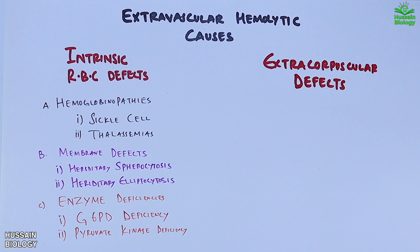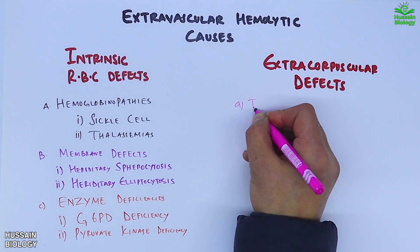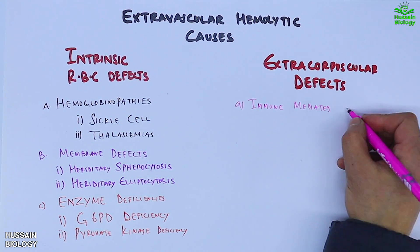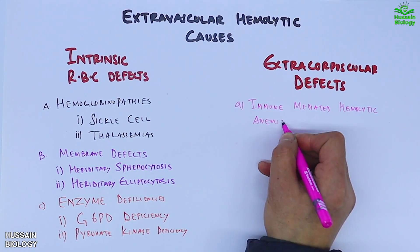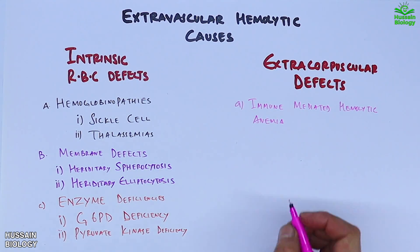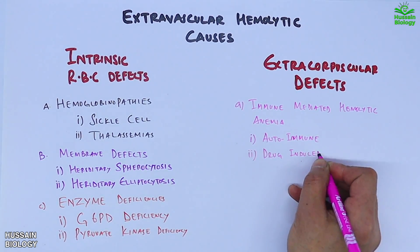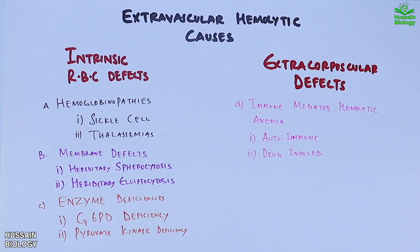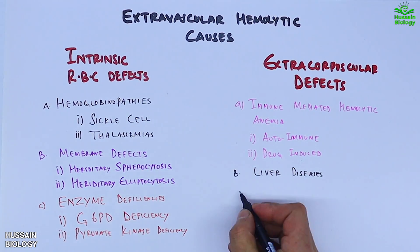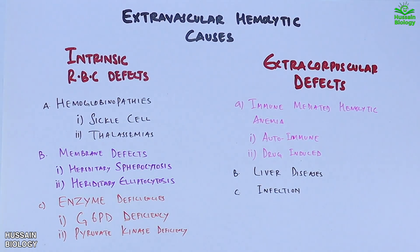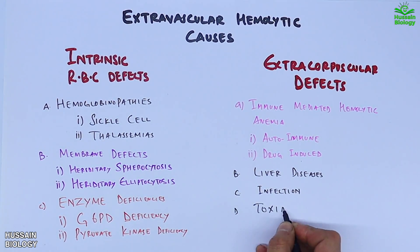Extra-corpuscular defects include immune-mediated hemolytic anemia such as autoimmune and drug-induced forms. It is also caused by liver diseases, infections, and some toxins.